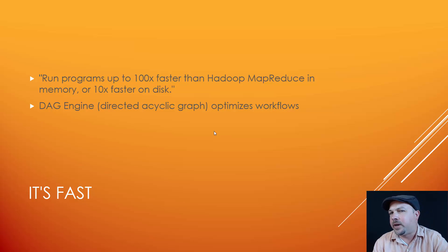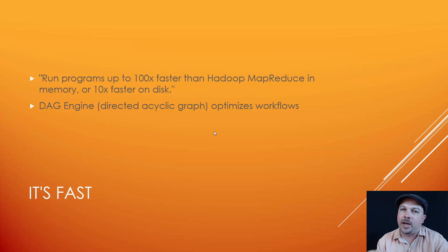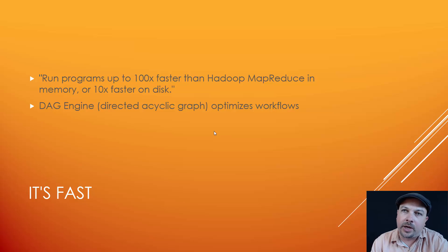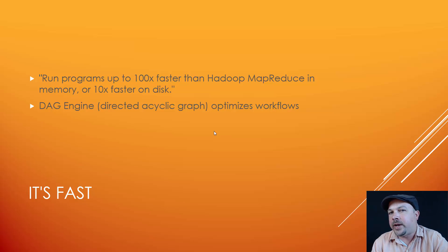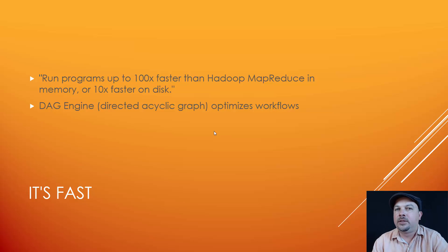In MapReduce, you'll find yourself writing a lot of things from scratch and wrapping your head around how to fit a problem into the MapReduce coding paradigm, whereas in Spark it's generally a lot easier. The reason it's so much faster is that Spark uses something called a directed acyclic graph — a DAG engine — to optimize its workflows.